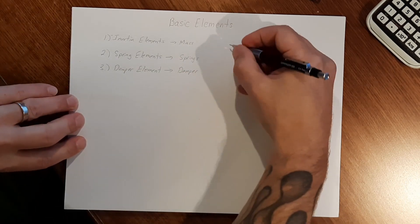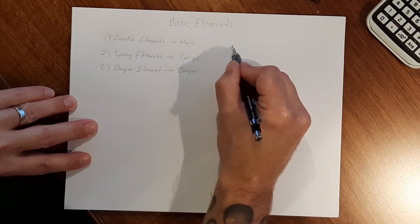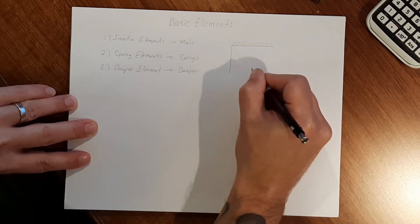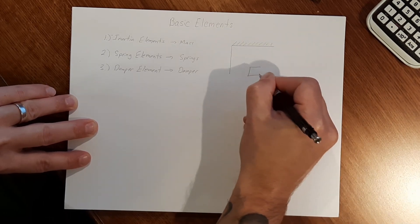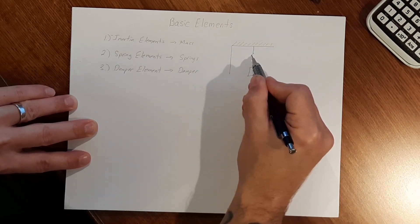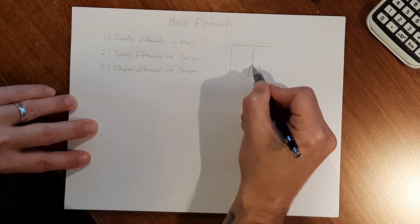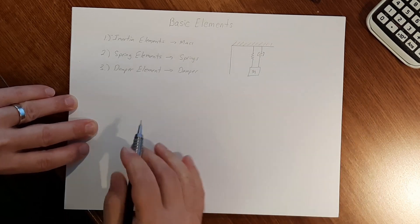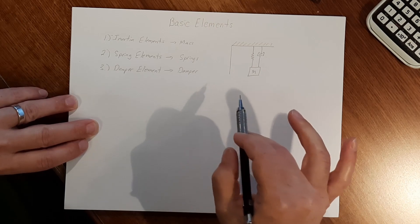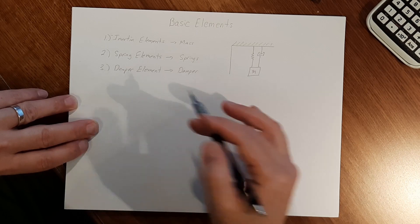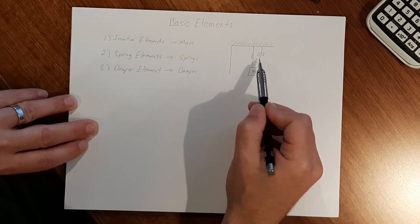Let's put a mechanical system up here. Let's say we have a mass that hangs from a ceiling, and we have it connected — so we have a spring and then we have a dampener. This is going to be a basic mechanical system that includes all three of the basic elements: a mass, a spring, and a dampener.